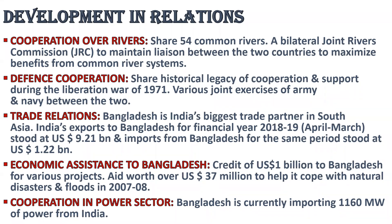The second area of cooperation is sharing river water. India and Bangladesh share 54 common rivers. In 1996, the sharing of the Ganga waters was successfully agreed upon between the two nations. A bilateral joint rivers commission has been working since June 1972 to maximize benefits for common river systems. India and Bangladesh share the historical legacy of cooperation and support during the liberation war of 1971. Even today, various joint exercises of army and navy take place between the two countries. Over the last decade, bilateral trade between India and Bangladesh has grown. Bangladesh is India's biggest trade partner in South Asia. India has extended a 2 billion US dollar line of credit to Bangladesh, and 20 other agreements including bus services, shipping and trade have also been signed.